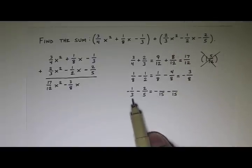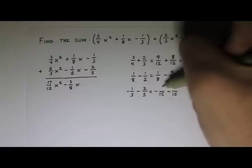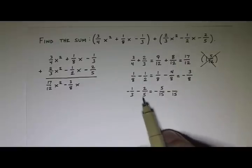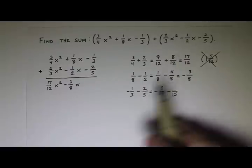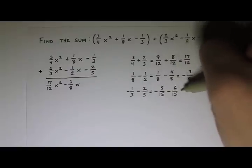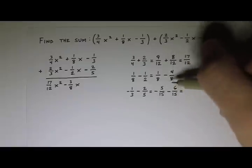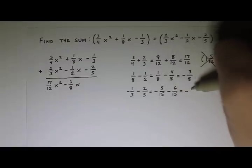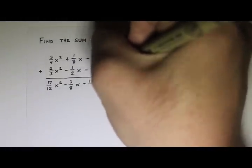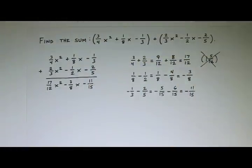5 times 3 is 15, 2 times 3 is 6. And then -5 minus 6 is -11. So that's -11/15. And that is the constant term, -11/15. And now I'm done.